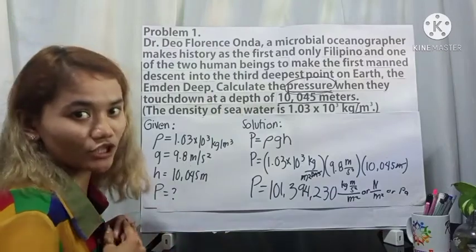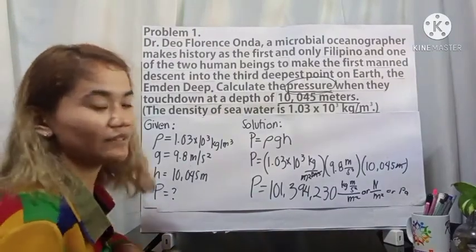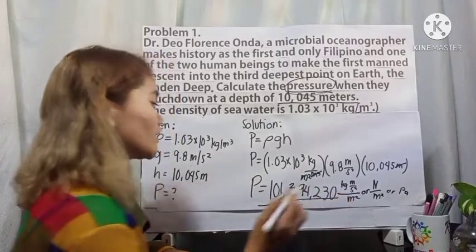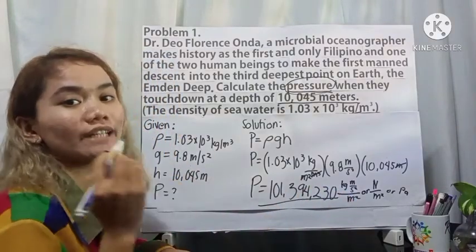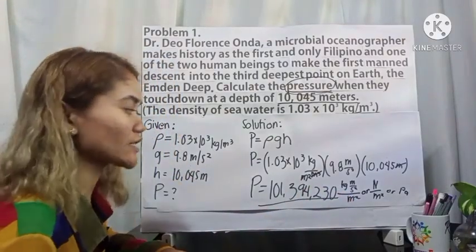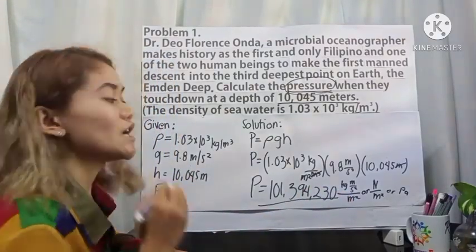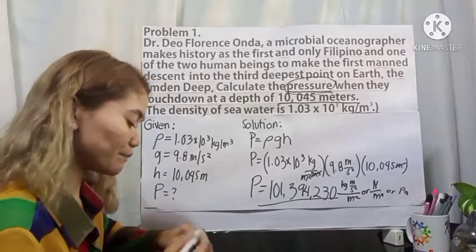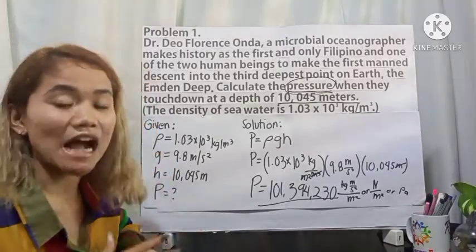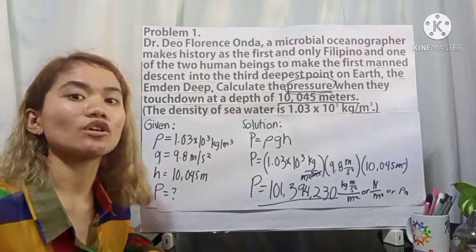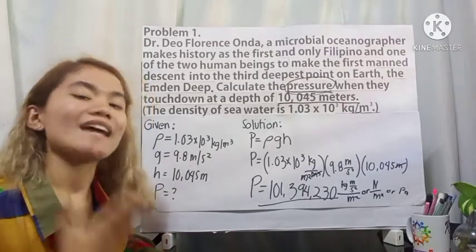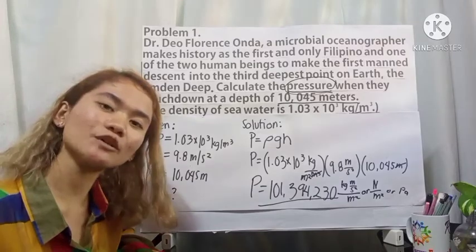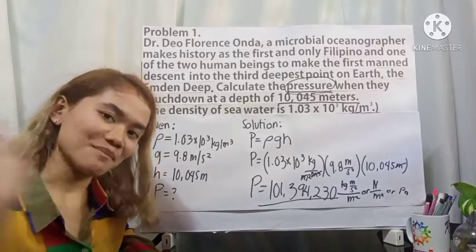So the pressure at the Mden Deep is 101,394,230 newton per meter squared, or pascals. That is how we solve for liquid pressure. I hope you have learned something today. Thank you for watching. Bye-bye.